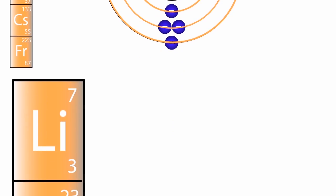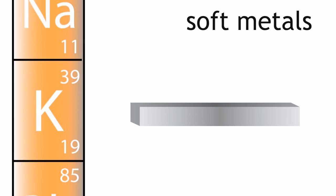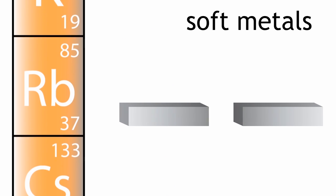The elements in the group are all metals. They are all soft metals which can be easily cut. They get softer as you go down the group.